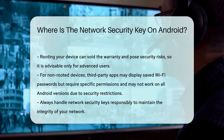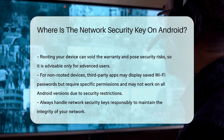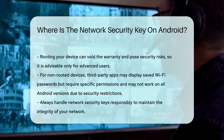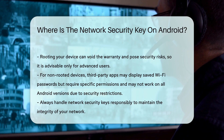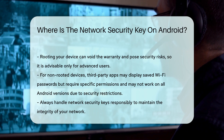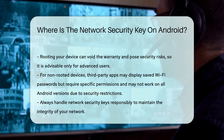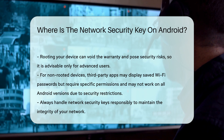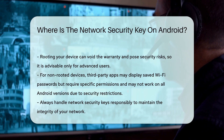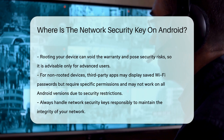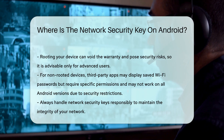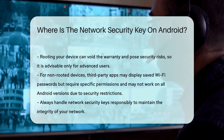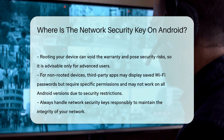In summary, finding the network security key on an Android device involves accessing Wi-Fi settings, possibly scanning a QR code, or using advanced methods for rooted devices. Always ensure you handle network security keys responsibly to maintain the integrity of your network.